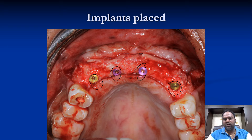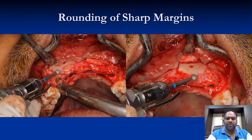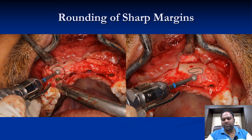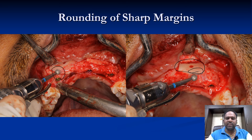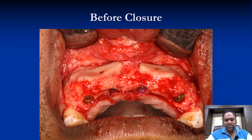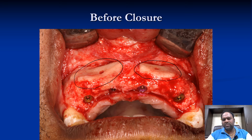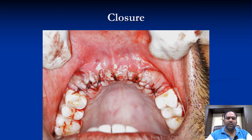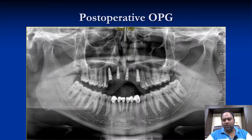All four implants were submerged and closure was done. Wherever there was sharpness from the autogenous bone, we reduced those chips to a blunt point using a coarse bur. You can still appreciate the amount of bone present. The autogenous plates are also holding the bone, and there is fresh blood — a very good sign indicating they have been well accepted at the recipient site.